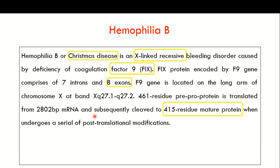In this particular video, I want to focus on hemophilia B, another important type of hemophilia. About 20 percent of hemophilia cases are hemophilia B. This is also known as Christmas disease, and just like hemophilia A, it is an X-linked recessive bleeding disorder. However, in hemophilia B there is a deficiency of coagulation factor 9, as compared to factor 8 in hemophilia A. This means the F9 gene is located on the X chromosome.